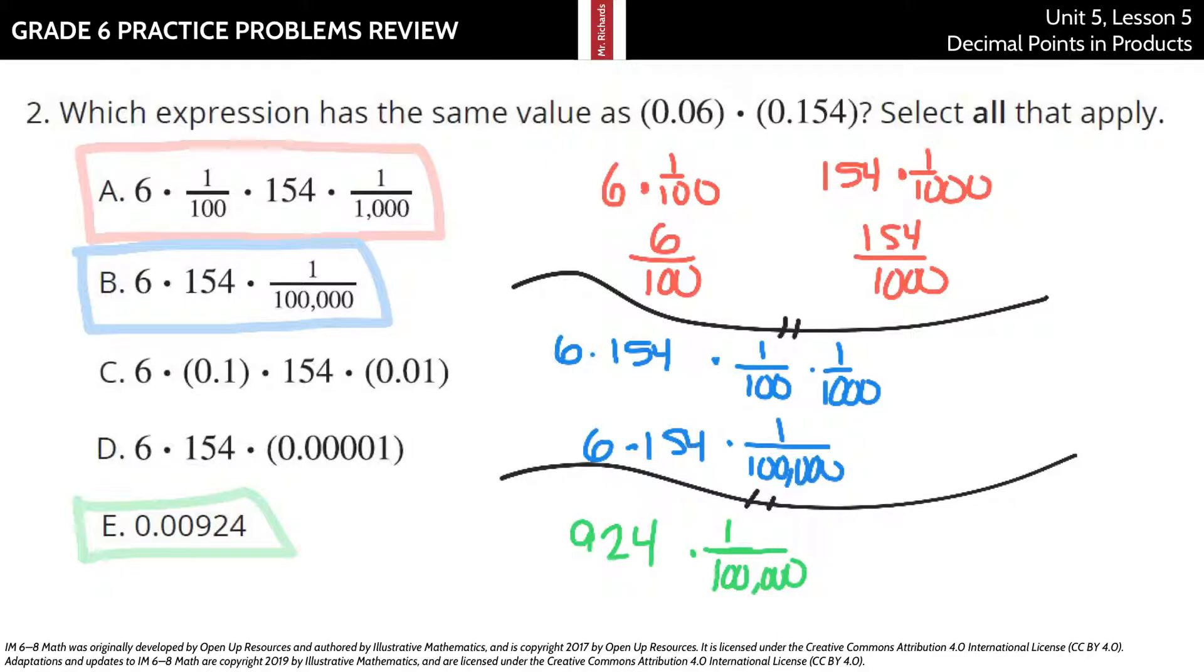Which expression has the same value as six hundredths times one hundred fifty-four thousandths? Select all that apply. And so I've taken this through here, and the first one does apply because you have six times one hundredth, which is six hundredths, and you have the hundred fifty-four thousandths, which is the same thing as one hundred fifty-four times a thousandth. Now, that's six hundredths, that's one hundred fifty-four over a thousandth.